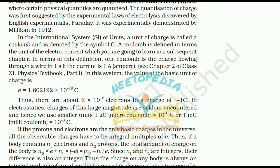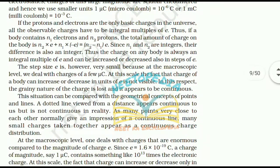The fact that electric charge is always an integral multiple of e is termed quantization of charge. The quantization of charge was first suggested by experimental laws of electrolysis given by Faraday and was experimentally demonstrated by Millikan in 1912. In the SI system, the unit of charge is called coulomb, denoted by C. One coulomb is the charge flowing through a wire in one second if the current is one ampere. The value of the basic unit of charge is e = 1.602192 × 10⁻¹⁹ coulomb. Thus there are about 6 × 10¹⁸ electrons in a charge of −1 coulomb. In electrostatics we use smaller units like 1 microcoulomb (10⁻⁶ C) or 1 millicoulomb (10⁻³ C).